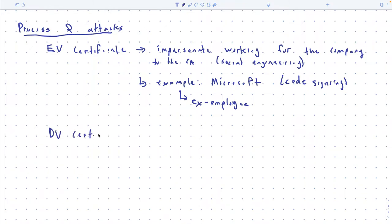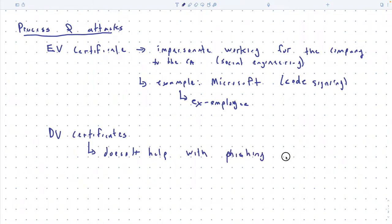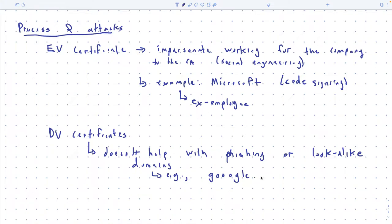Now, DV certificates. The first thing is that they don't help with phishing or look-alike domains. Something like 'goggle.com' — you can get a DV certificate for that. So if you go to a site like that and you see the lock, it doesn't mean it's Google the company. You couldn't get an EV certificate displaying 'Google Inc.' for it, but you can get a DV certificate because the person asking for it actually controls that domain.